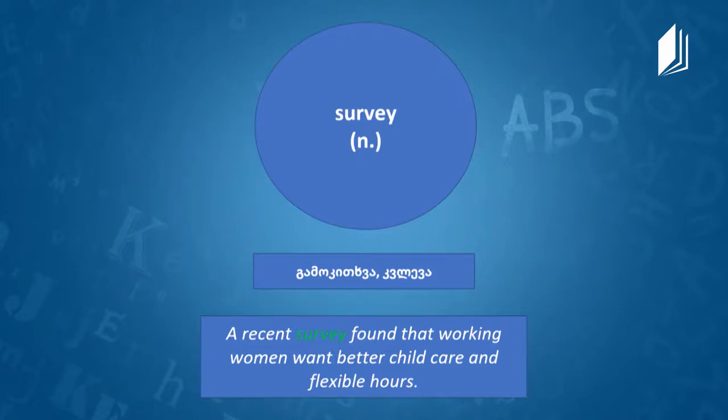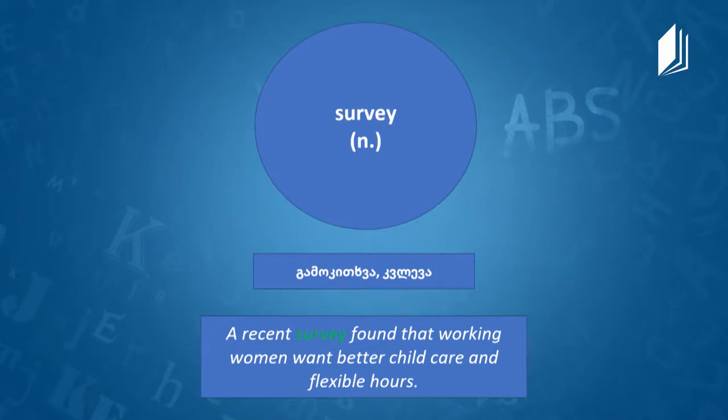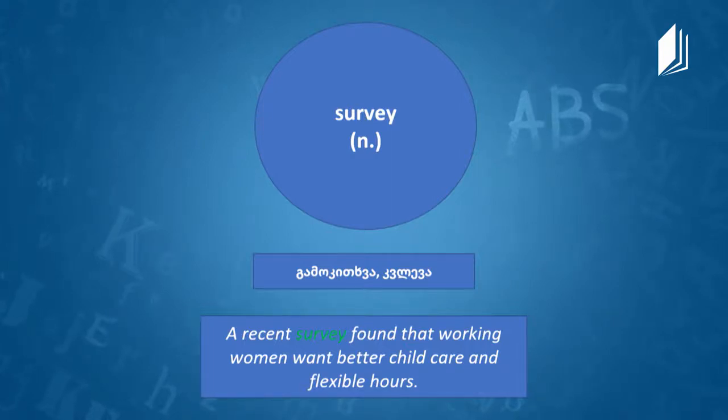Now let's learn some vocabulary which will help us understand the text better. The first word is survey. Survey is a noun — some kind of examination of behavior, opinions, and so on, usually made by asking people questions. You can 'carry out a survey' or 'do a survey.' Example: 'A recent survey found that working women want better childcare and flexible hours.' Important for modern workplaces.